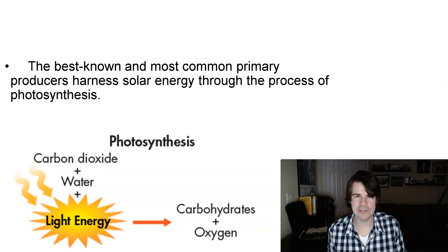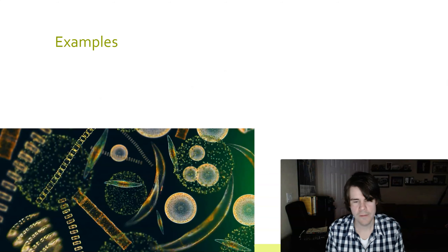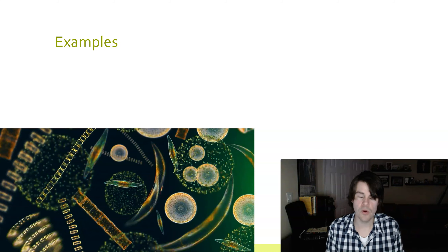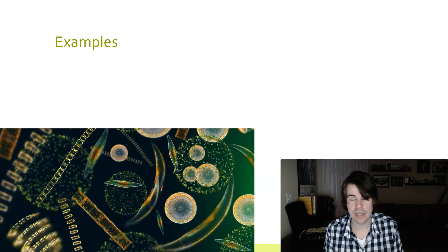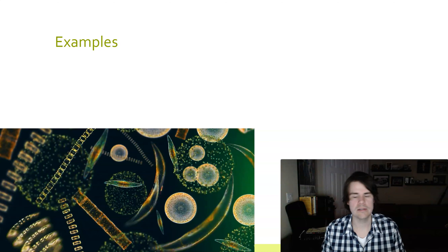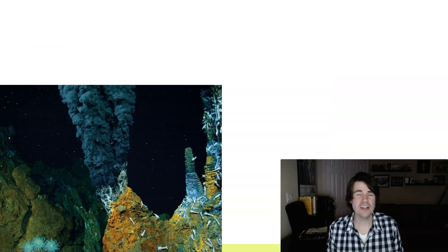Think of it like Legos — you have to put energy in to build something complex, and that energy comes from the Sun. For marine examples of phytoplankton, one type of phytoplankton is dinoflagellates. Dinoflagellates cause red tide — certain species do. We're very familiar with red tide here in Florida. It's really hazardous — it kills fish, destroys the shoreline, and people with breathing problems like asthma or COPD really struggle around red tide. Kelp is another primary producer.